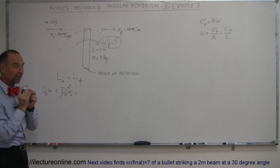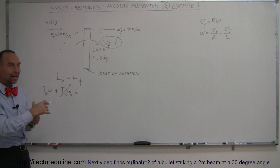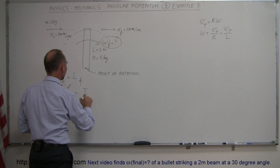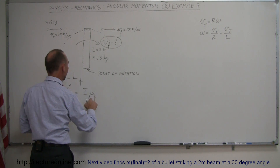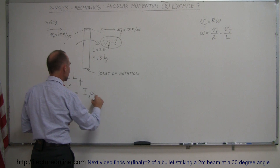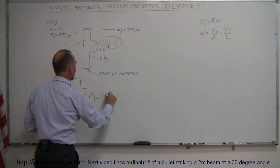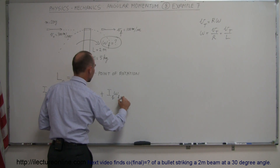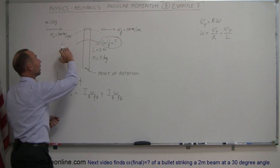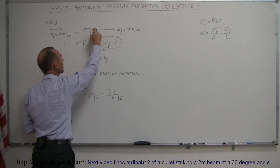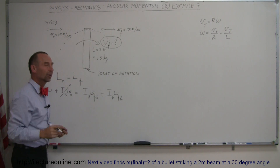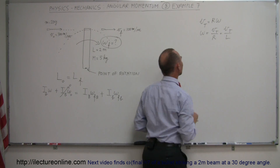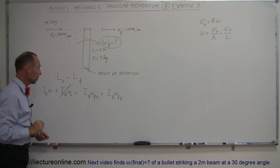On the final side, since the bullet and the beam don't stay together, they will each have their own equivalent angular momentum after the collision. So we have the moment of inertia of the beam times the final angular velocity of the beam, plus the moment of inertia of the bullet after the collision times the final angular velocity of the bullet — assuming that the 100 meters per second continues in the circular path and we find the equivalent angular velocity using the final velocity divided by L.